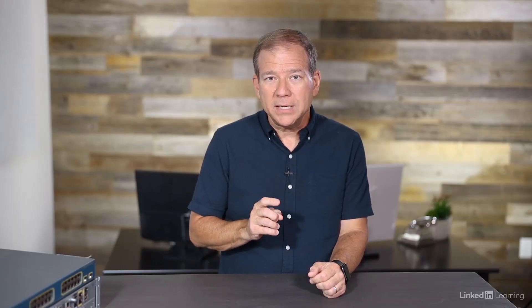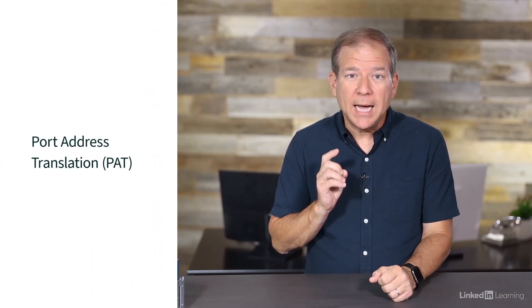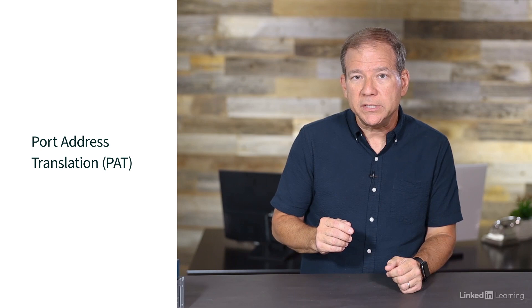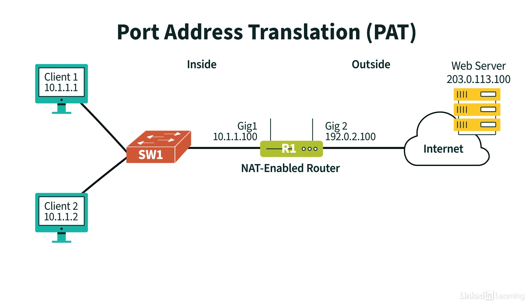This type of NAT is called dynamic NAT because we're dynamically translating multiple inside local addresses into multiple inside global addresses. However, many times we don't have the luxury of having a pool of publicly routable IP addresses. Instead, we might have only one IP address that our internet service provider gave us. Fortunately, there's a type of NAT that can let multiple inside local addresses share a single inside global address. It's called Port Address Translation, or PAT. With PAT, the challenge is: how do we let multiple inside local addresses share a single inside global address, and how does the router look at return traffic from the internet and know where to forward it on the inside network?